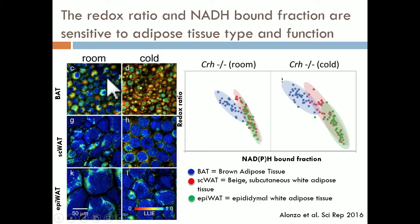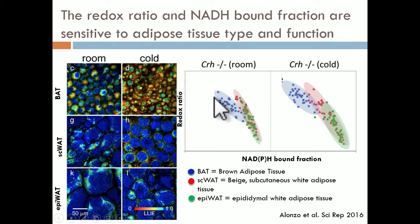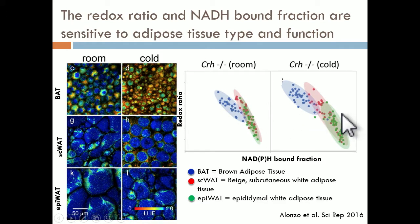We can do this in animals. These are examples of NADH-bound fraction-coded images from different types of adipose tissues of mice — brown, beige, and white adipose tissue — from mice exposed to room temperature or to extreme cold for a couple of days. We see very clear differences between the different types of adipose tissues and in response to cold activation. We can monitor both the redox ratio and the lifetime simultaneously to differentiate tissue types and monitor responses to cold.